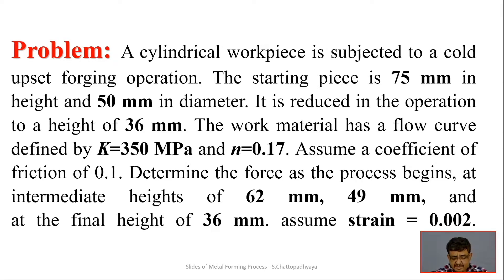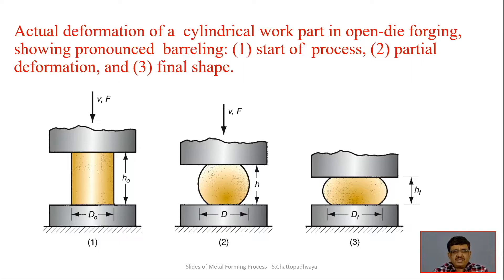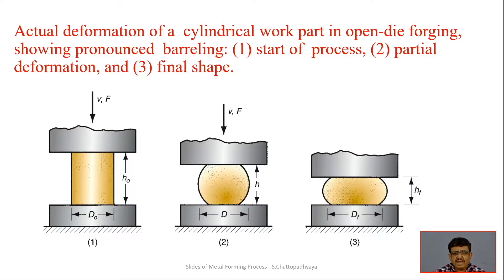Let us go into the problem to understand how it progresses. The actual deformation of a cylinder in open die forging shows a pronounced barreling effect — it becomes barrel-shaped after the pressure is applied. The first stage is the start of the process, the second is partial/intermediate deformation, and the third is the final shape. These are the parameters associated with the upsetting process.